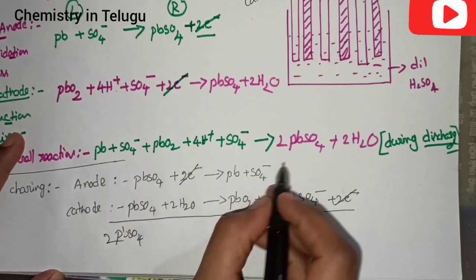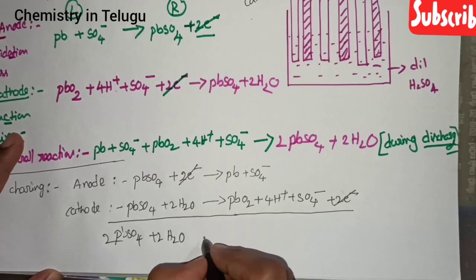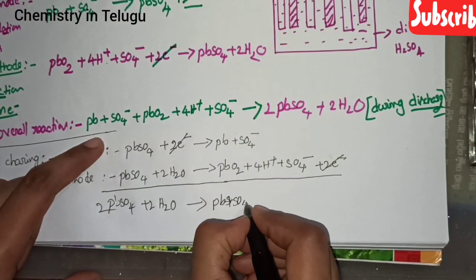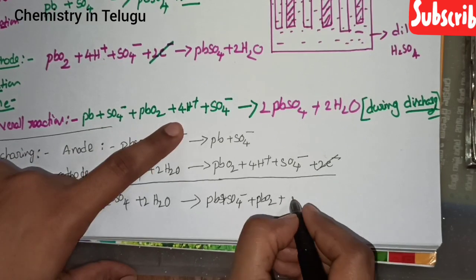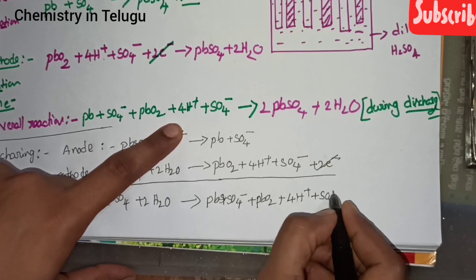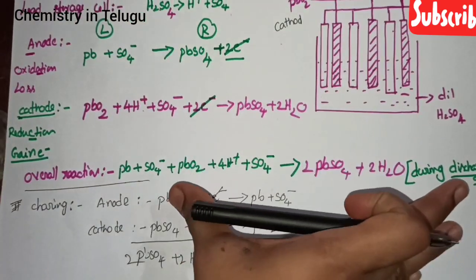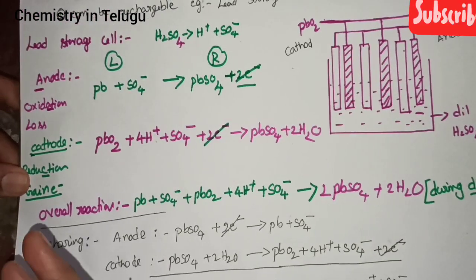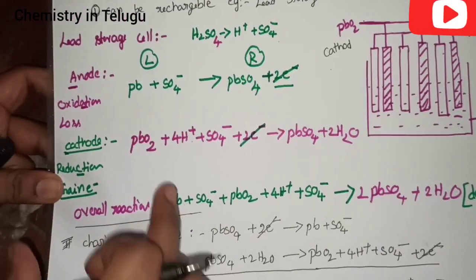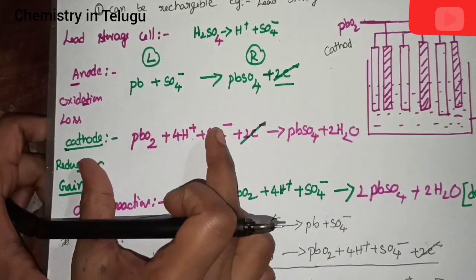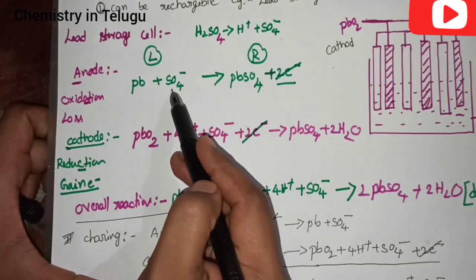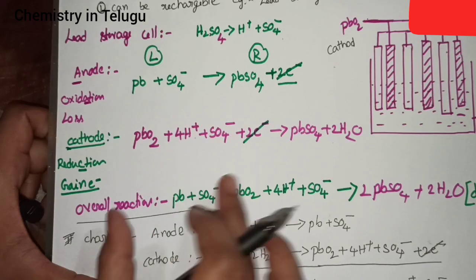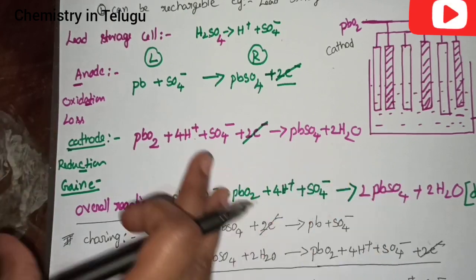During charging, PbSO₄ + 2e⁻ reverses at the anode back to Pb, and at the cathode PbSO₄ + 2H₂O reverses back to PbO₂ + 4H⁺ + SO₄²⁻. The overall charging reaction is also reversed: 2PbSO₄ + 2H₂O → Pb + PbO₂ + 4H⁺ + 2SO₄²⁻. This is why lead-acid batteries are secondary — they are rechargeable.